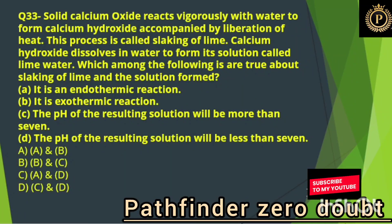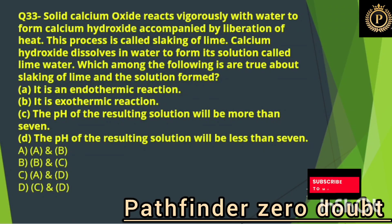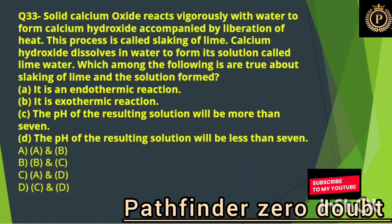Solid calcium oxide reacts vigorously with water to form calcium hydroxide, accompanied by liberation of heat. This process is called slaking of lime. Calcium hydroxide dissolves in water to form lime water. Which among the following is true about slaking of lime and the solution formed? Option B, it is an exothermic reaction.